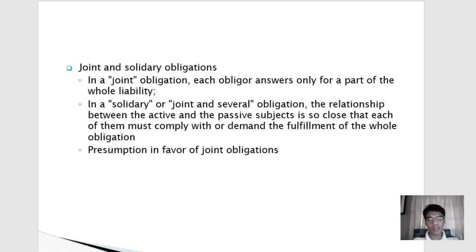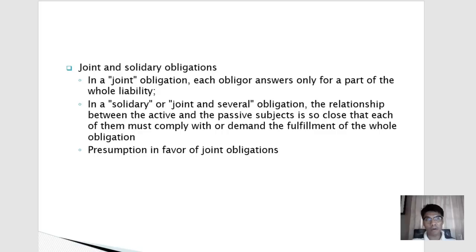In a solidary — or joint and several — obligation, each debtor must comply with or can be required to fulfill the whole obligation. With five solidary debtors, any one of them can be sued for the entire obligation, although personally he is only liable for one-fifth. Under the law, in case of doubt whether an obligation is joint or solidary, the presumption is in favor of joint obligations, because this is less onerous and less burdensome.